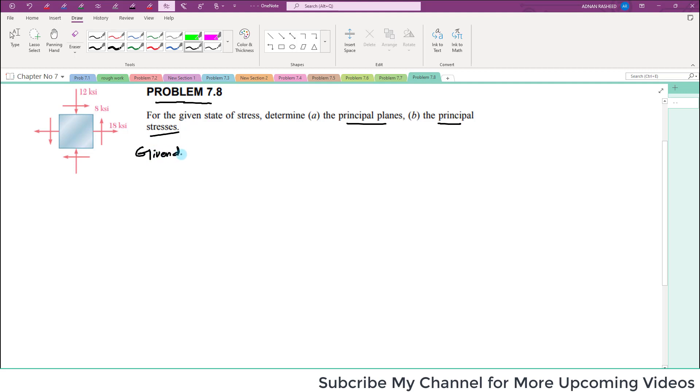So given data on the state of stress, you can write: sigma_x is equal to 18 ksi because it is in the x direction, and sigma_y is equal to minus 12 ksi because it is in compression.